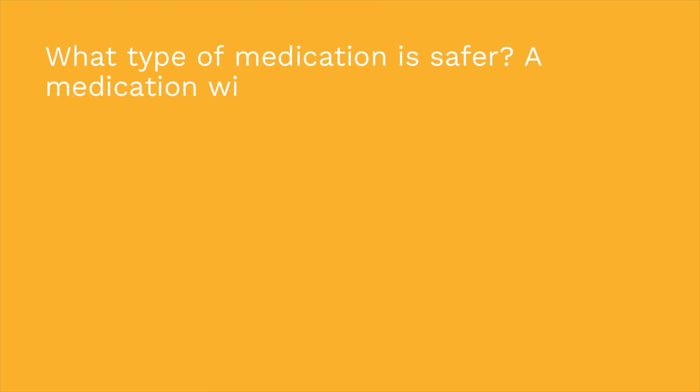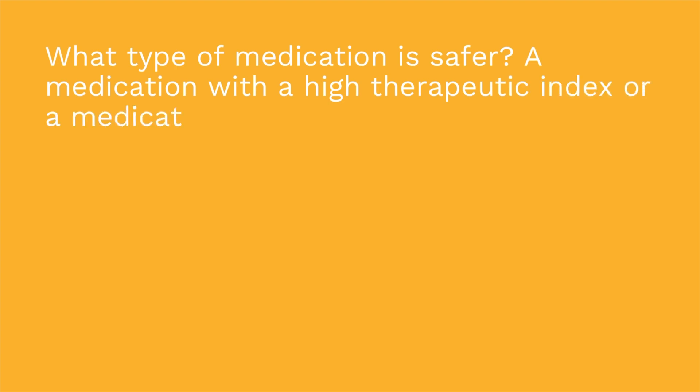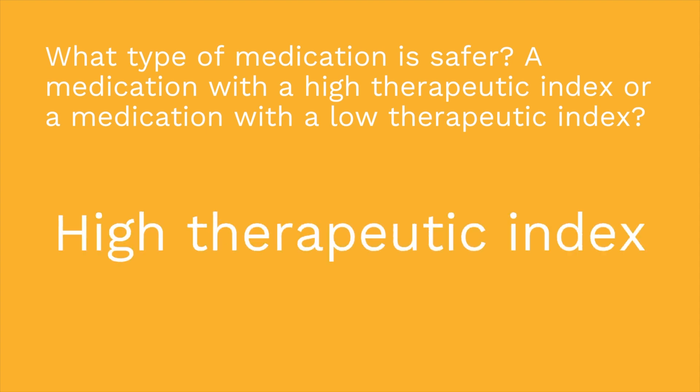Are you guys ready for your quiz? First question: what type of medication is safer — a medication with a high therapeutic index or a medication with a low therapeutic index? The answer is high therapeutic index. That means we have a lot of room between that minimum effective concentration and the concentration at which we worry about toxicity.